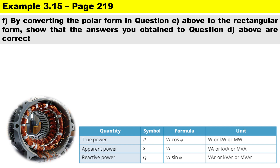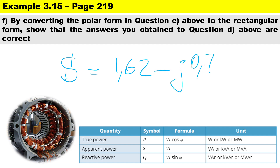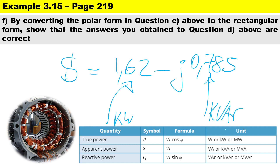Finally, converting the polar form to rectangular form using a calculator, the apparent power becomes S = 1.62 − j0.785 kVA. The real part (1.62) represents the actual true power in kilowatts, and the imaginary part (0.785) represents the reactive power in kVAR. Thanks for watching.